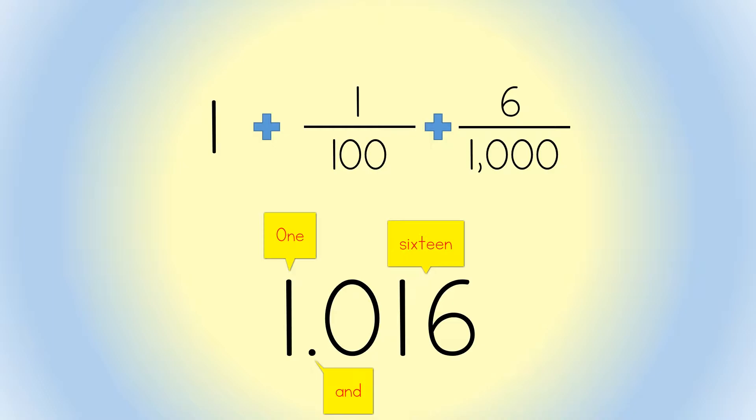The last word you should say is the name of the place of the lesser value. Here, the 6 is in the thousandths place. That is the lesser place: 1 and 16 thousandths.